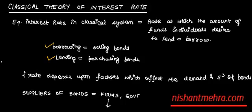In the classical system, borrowing means selling bonds. For example, a government sells bonds to the public; the public gives money to the government. So the government is the borrower and seller of bonds, while the public is the lender and purchaser of bonds.